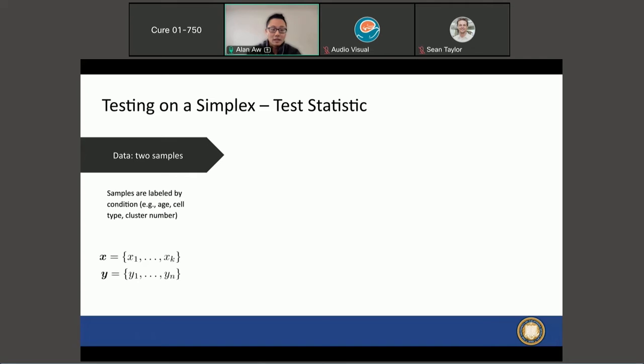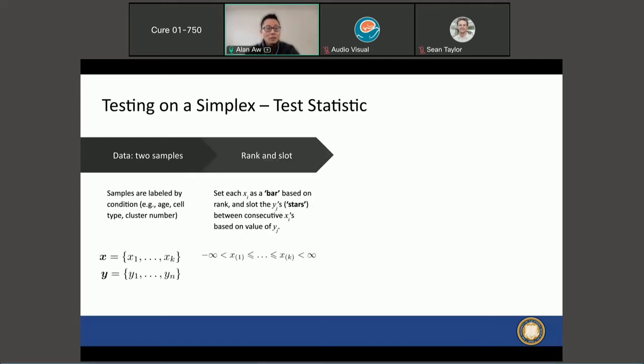I'm going to walk you through step by step how this works. Suppose you're given two samples labeled by some condition of interest. What we do to the two samples is take the smaller sample, for instance x, and rank the values of x and set the points as bars, then slot the second sample's points in between the consecutive bars.